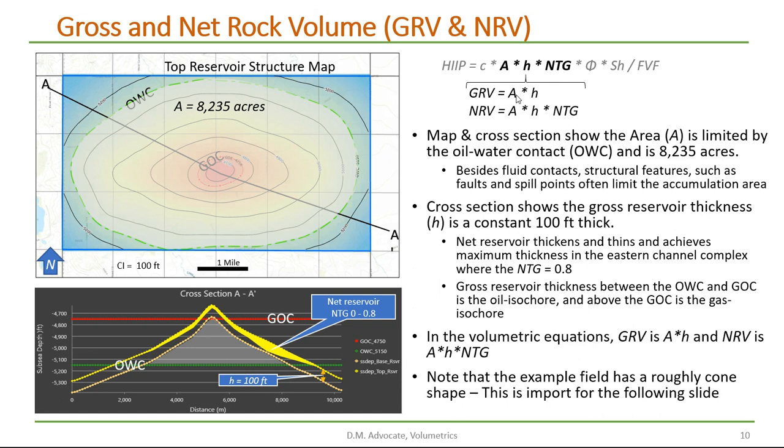There's the area and the height, the height being the isochore thickness of the reservoir section. And when we want to go to net rock volume we add the term the net to gross.